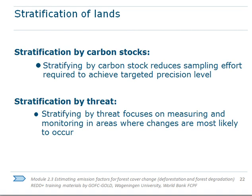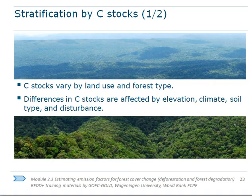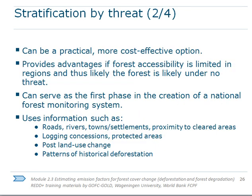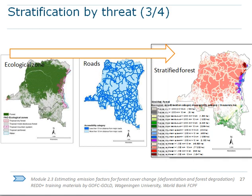Stratification can be done by carbon stock, since that is what we want to estimate, making it sensible to map areas with similar carbon levels. Another useful approach is to stratify by threat — identifying areas with higher risk of deforestation — since these require more accurate estimates and more measurements. For example, in Guyana they mapped ecosystems and roads, knowing that most deforestation occurs within a certain distance from roads, providing useful information on where to prioritize field measurements.